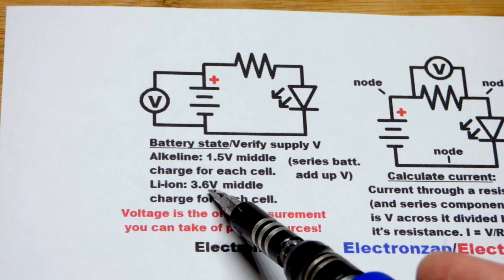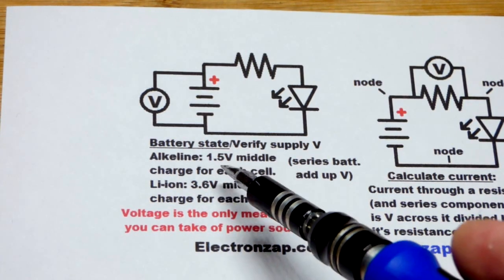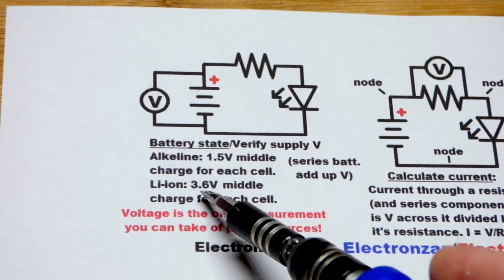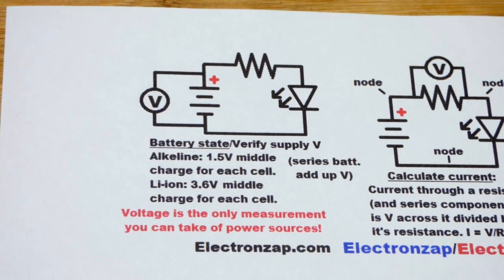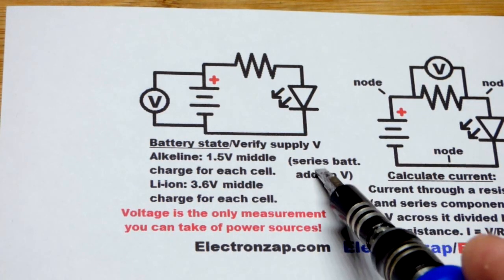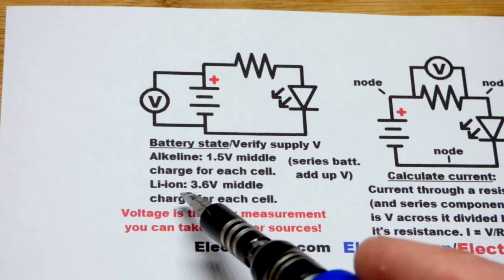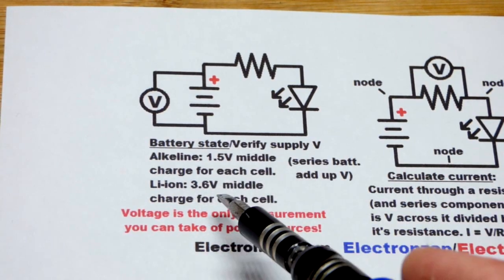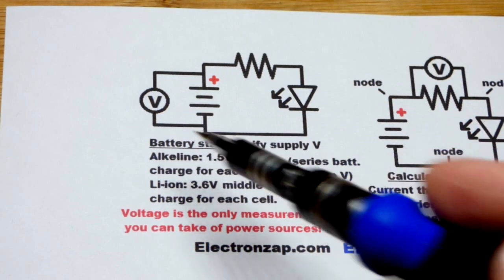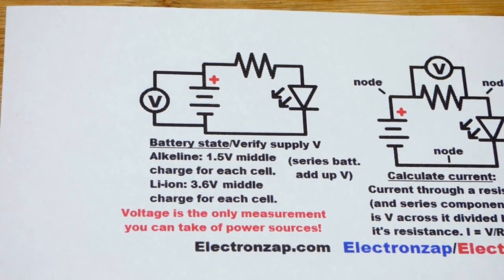With lithium ion batteries, 3.6 volts is doing pretty good. It can go up to 4.2 when it's fully charged. And you should stop using it at about 3 volts right there. And remember that series batteries adds up. So if you have a bunch of them in series, then all of their voltages will add up. And you can measure them independently or the total.